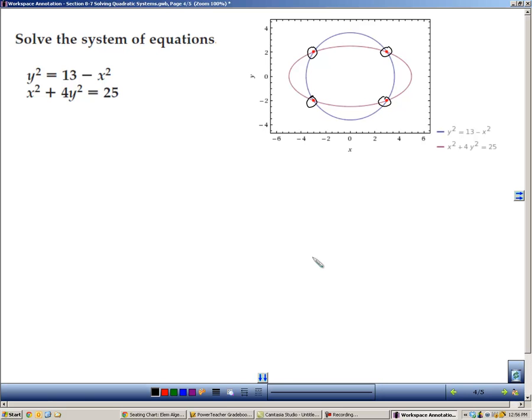Now we don't have an x or a y that isn't squared, so substitution probably isn't going to be the best method here. So what I'm going to do is I'm going to make this x squared plus y squared equals 13. And then I'm going to write the second equation below because this is perfectly set up for me to use elimination.